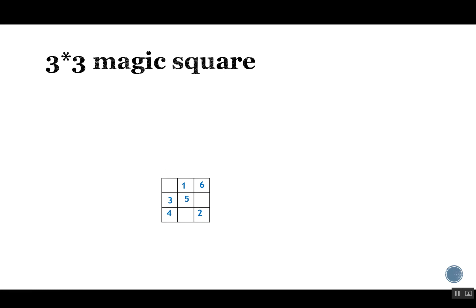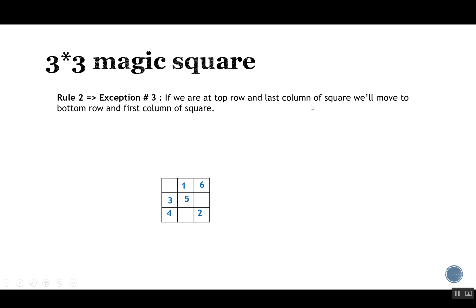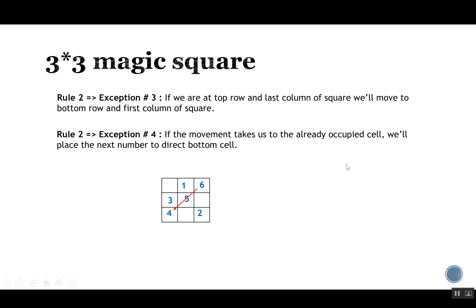Numbers 5 and 6 can be placed using rule two — moving up-right diagonally — since the cells are free. For number 7, we are at the top row and last column, which is exception three. We move to the bottom row and first column, but that cell already has number 4, so exception four applies again: place number 7 in the direct bottom cell.